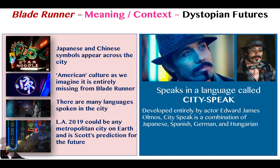Another way this is shown is through the character of Gaff, played by Edward James Olmos. Gaff is seen periodically throughout the film and speaks in a language called 'city speak' — a language Olmos himself invented — a combination of Japanese, Spanish, German, and Hungarian. The idea behind his character and language is to show that there is no overriding American culture anymore. What we have instead is a global culture, enabled by Reagan's deregulation and the rise of consumerism.